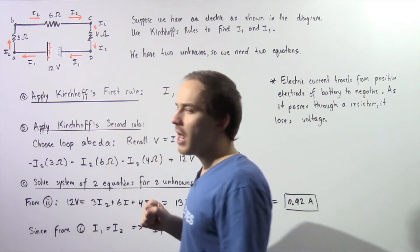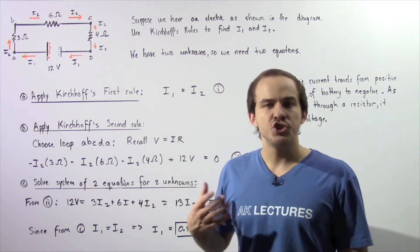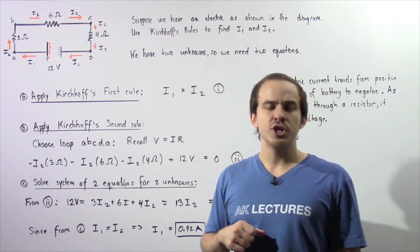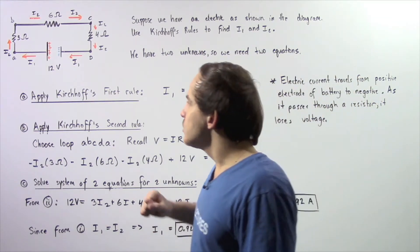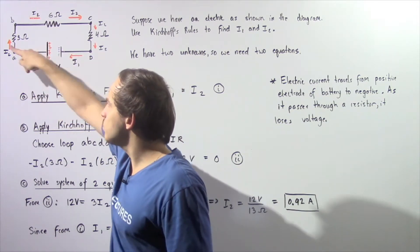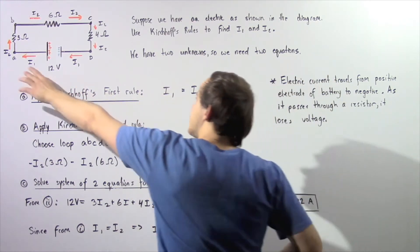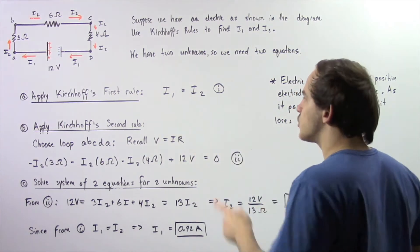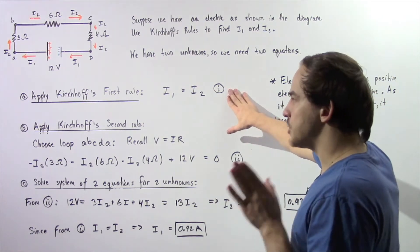Let's begin by applying Kirchhoff's 1st rule, also known as the junction rule. It tells us the electric current that goes into any junction is equal to the electric current that comes out of that same junction. If we examine junction A, I1 is equal to I2. The electric current going into junction A equals the current coming out. Let's call this equation I.